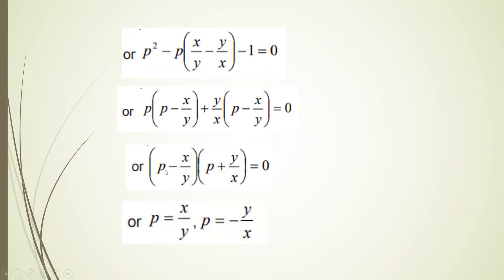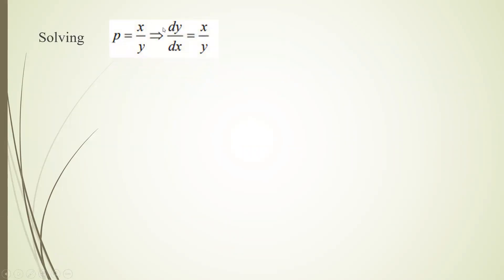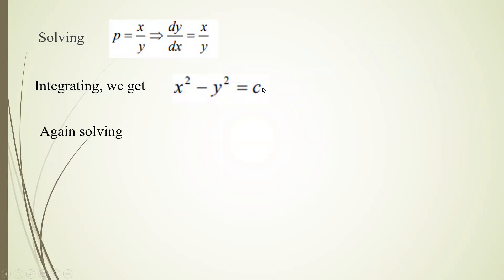The two factors give: p = x/y and p = -y/x. For p = x/y: dy/dx = x/y, so y·dy = x·dx, integrating gives y²/2 = x²/2 + c, i.e., x² - y² = c. For p = -y/x: dy/dx = -y/x, separating: dy/y + dx/x = 0, integrating gives log y + log x = log c, so xy = c.